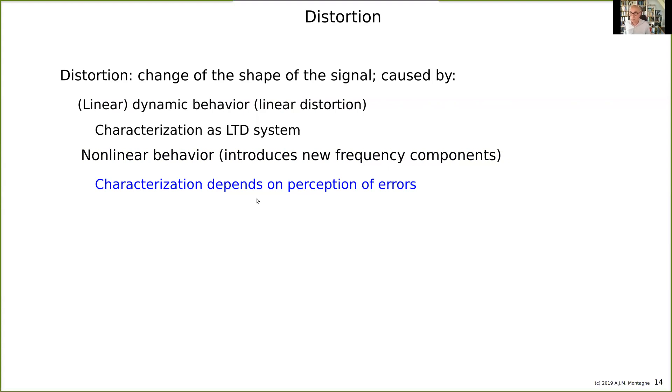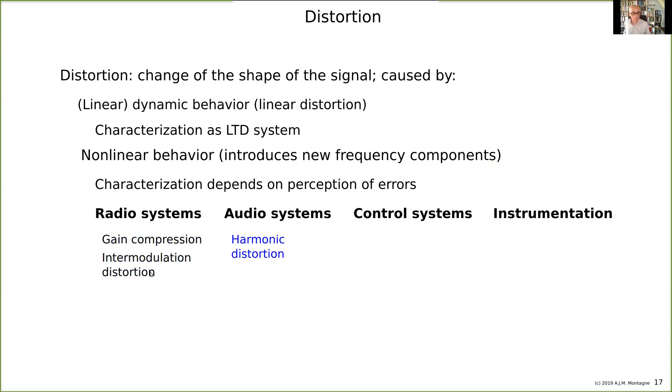The way you model non-linearity depends very much on the perception of error by the observer. It's all about information processing. Here put some together: the radio systems, we use something like gain compression. You're listening to one station, and there is a very strong station next to it. You're not listening to it, but it overdrives your amplifier and effectively the gain drops. You will hear that it's gain compression, intermodulation distortion. In audio, harmonic and intermodulation distortion. In control systems, differential gain and differential phase. In instrumentation, non-linearity. You never know. Ask the observer how the error is observed, and then this is the domain in which we should describe it.